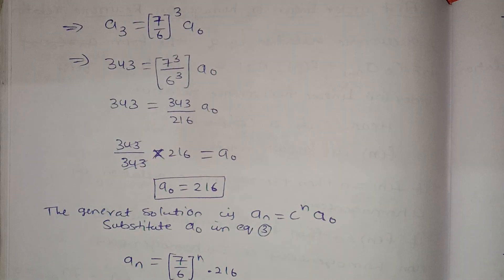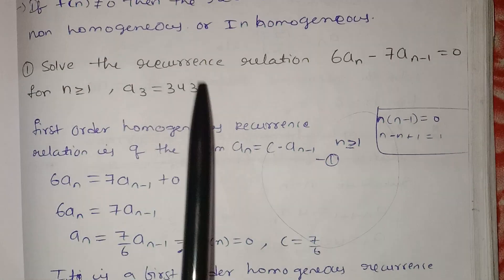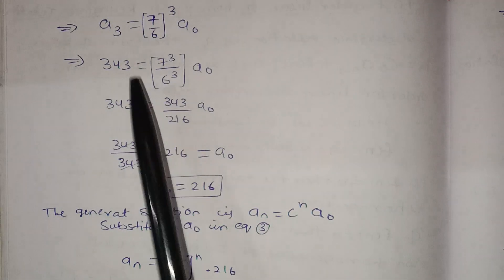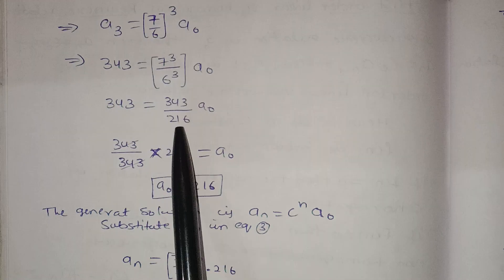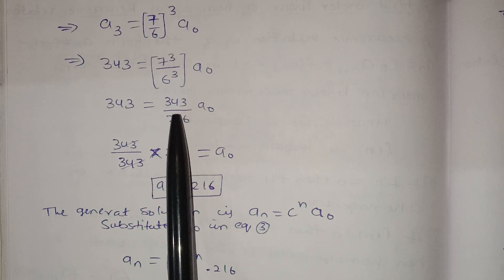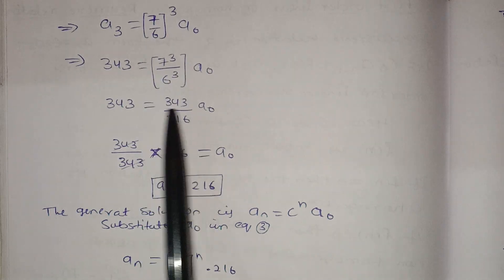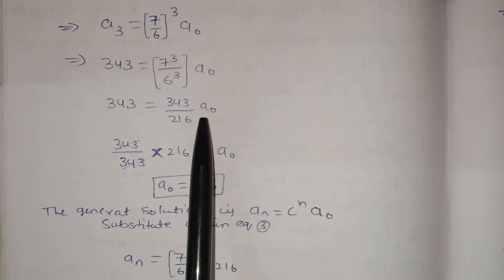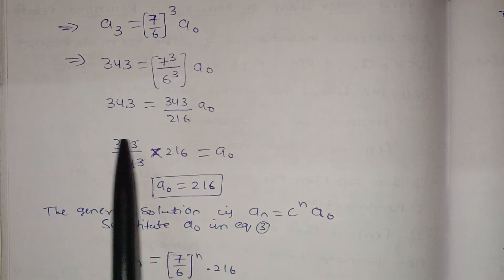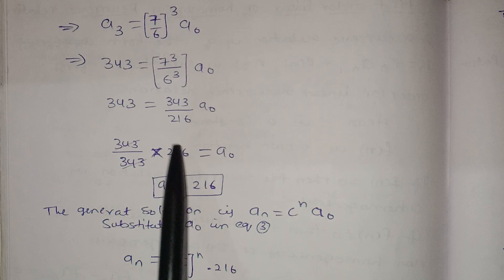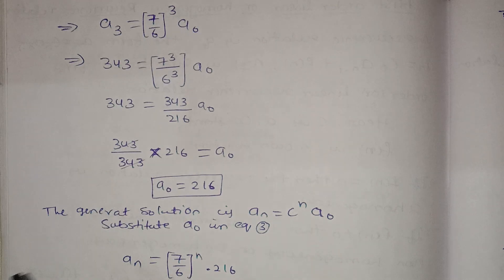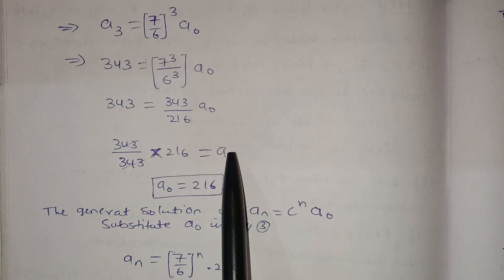We are given A₃ = 343. So: 343 = (7³/6³) · a₀ = (343/216) · a₀. Therefore 343 × 216/343 = a₀, and the 343 cancels, giving a₀ = 216.